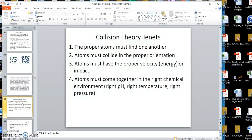The collision theory principles would basically be this. The proper atoms must find one another. Atoms must collide in the right orientation. What it means is atoms bond at a certain angle. So if they bounce into one another and they're not having that bounce in the right orientation, they will just bounce away. They also must have enough velocity to bounce in and lock the bond. And they must come together in the right chemical environment like pH, temperature, and everything like that.